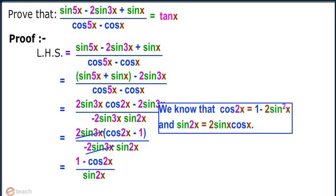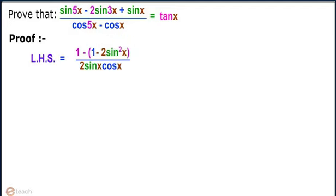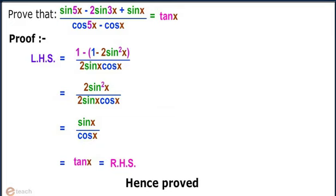We know that cos 2x equals 1 minus 2 sin²x and sin 2x equals 2 sin x cos x. So the LHS becomes (1 minus (1 minus 2 sin²x)) divided by (2 sin x cos x), which equals 2 sin²x divided by (2 sin x cos x), which simplifies to sin x divided by cos x, equal to tan x.